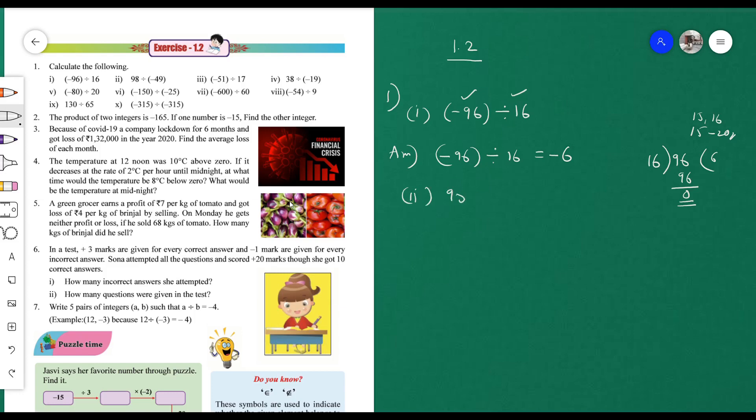Second one is 98 divided by minus 49. First, we look at the values: 98 divided by 49. 49 times 2 is 98, so the answer is 2. But one is positive and one is negative, so the quotient is negative. Direct answer: minus 2.